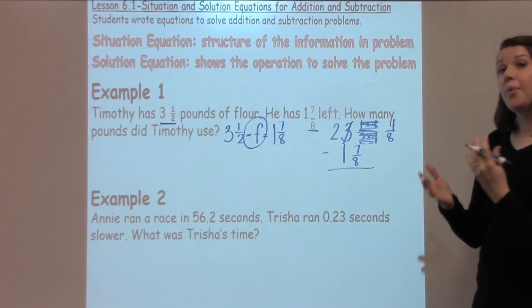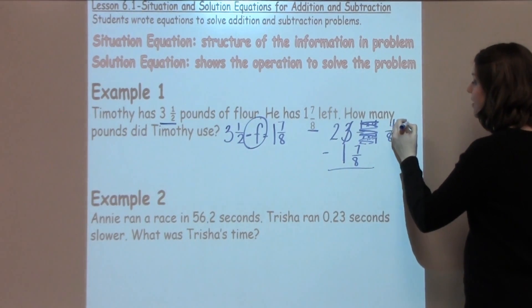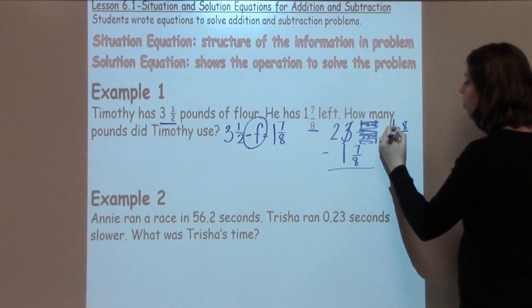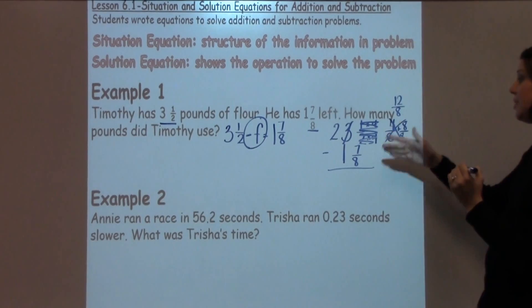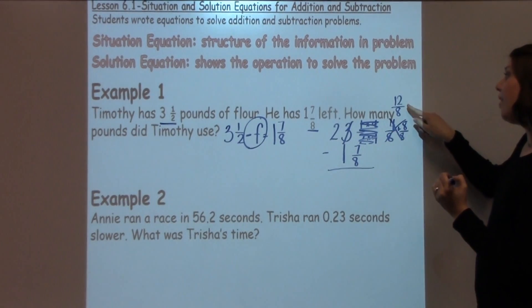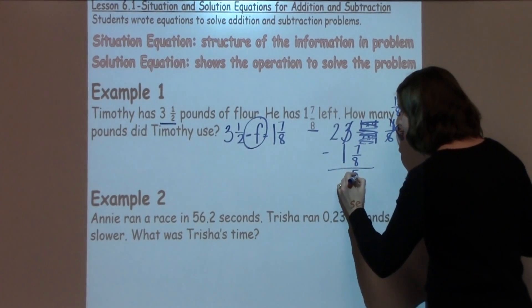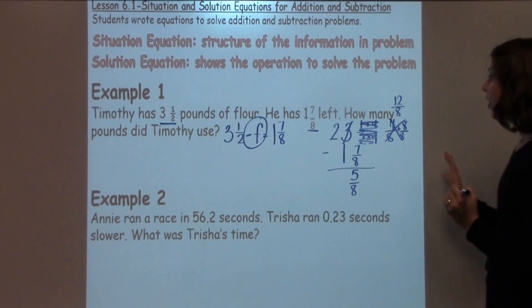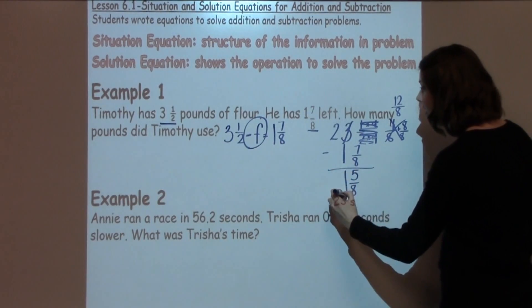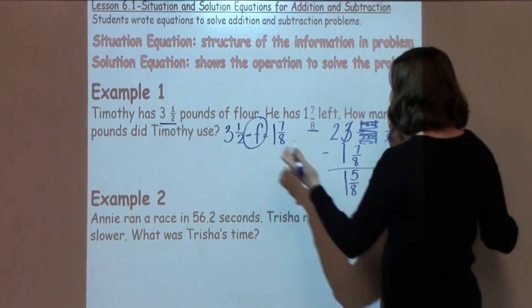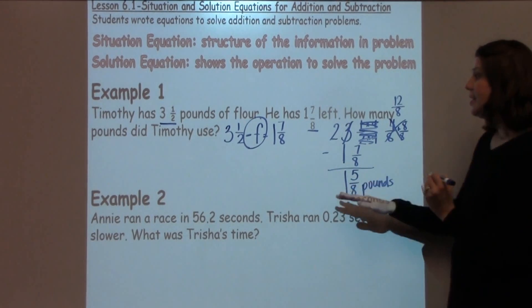I notice right now that I cannot take my 4 8ths from my 7 8ths, so I need to borrow. This becomes a 2. I took away one whole. In this case, that is 8 8ths. So I know I've got 4 8ths plus 8 8ths, which is going to give me 12 8ths, and I'm going to write that above. So I've got 12 8ths, which is an improper fraction, but I know I need more to be able to subtract. When I take my 12 8ths minus my 7 8ths, I get 5 8ths. Now I need to work with my whole numbers, which is my 2 minus my 1, which is going to give me 1. I'm going to look at my label, which is going to be pounds.